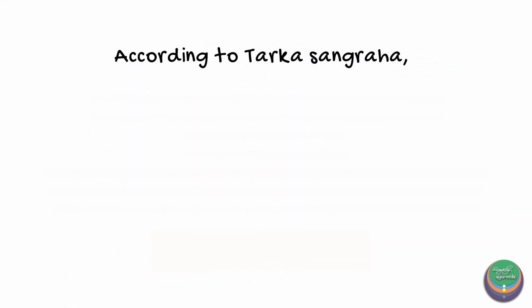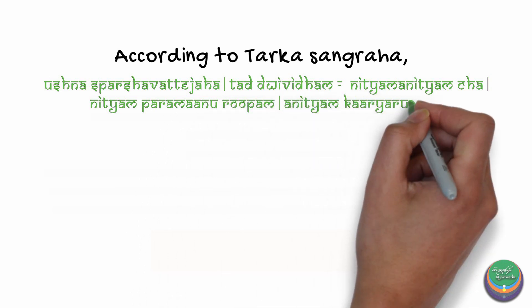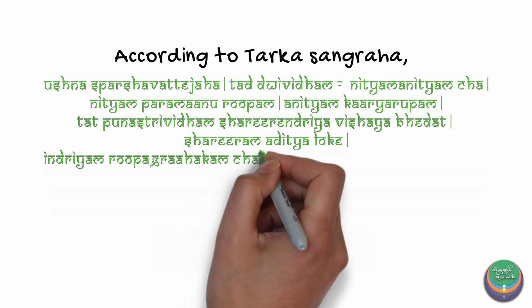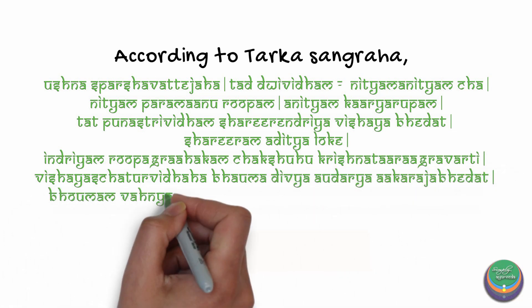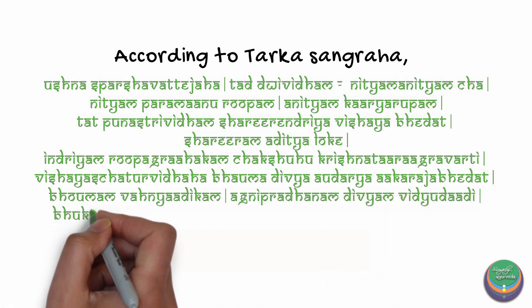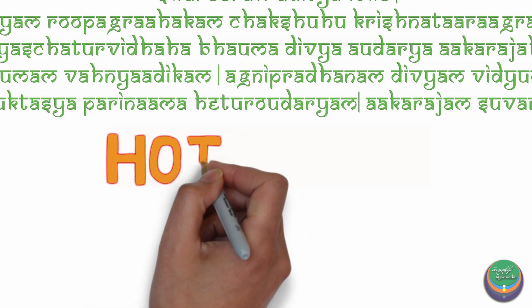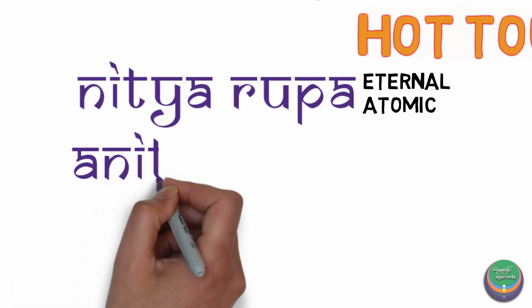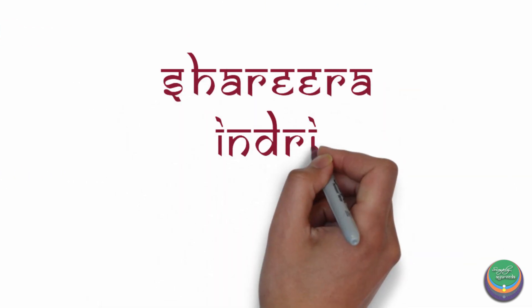Let us now understand Agni Mahabhuta in detail with the explanation from Tarkasangraha. Agni is that which has hot touch. It exists in two functional states: Nithya Rupa, which is eternal and atomic, and Anithya Rupa, which is Karya Rupa, created from the Paramanus. This Karya Rupa, which is perishable, is of three forms: Charira, Indriya, and Vishaya.